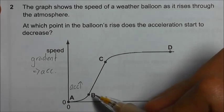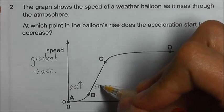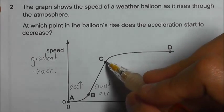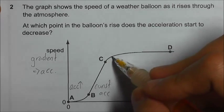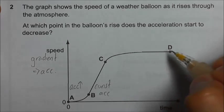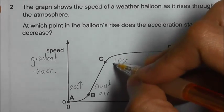Starting from B is a straight line. So the speed increases at constant rate. We have constant acceleration. And from C onwards, we see that the gradient is decreasing. So we have a decreasing acceleration.